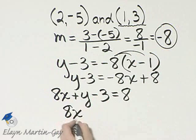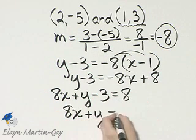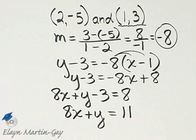If I add 3 to the left side, I'll have 8x plus y, and the 3s will add out. Don't forget to add 3 to this side, 8 plus 3 is 11. This is in standard form.